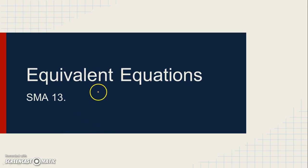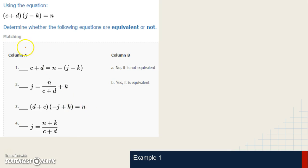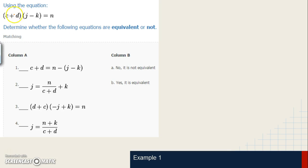Today's video covers equivalent equations — this is video number 13 in the standard mastery assessment. There are several different ways to attack this problem. This video will focus on assigning numbers to each letter and figuring out whether or not the equations are equivalent. You could also multiply out the terms and solve for the same letter, but the strategy we're using today is much more efficient.